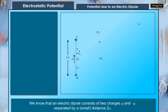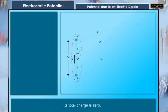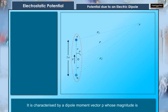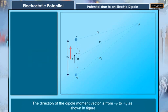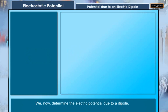We know that an electric dipole consists of two charges Q and minus Q separated by a small distance 2A. Its total charge is 0. It is characterized by a dipole moment vector P whose magnitude is Q times 2A. The direction of the dipole moment vector is from minus Q to Q as shown in figure. We now determine the electric potential due to a dipole.